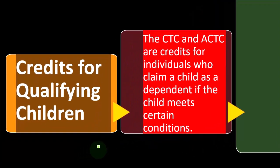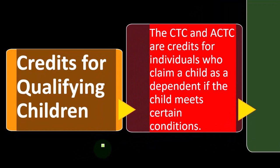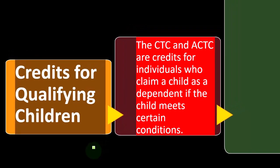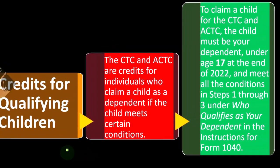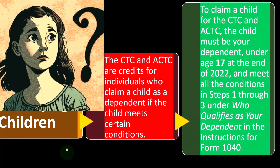Credits for qualifying children: The CTC child tax credit and ACTC additional child tax credit are credits for individuals who claim a child as a dependent if the child meets certain conditions. The general idea is that we have a dependent and the question is what will be the tax benefit from that dependent. Usually the child tax credit would be the biggest benefit; if not, we move on to the other dependent credits.